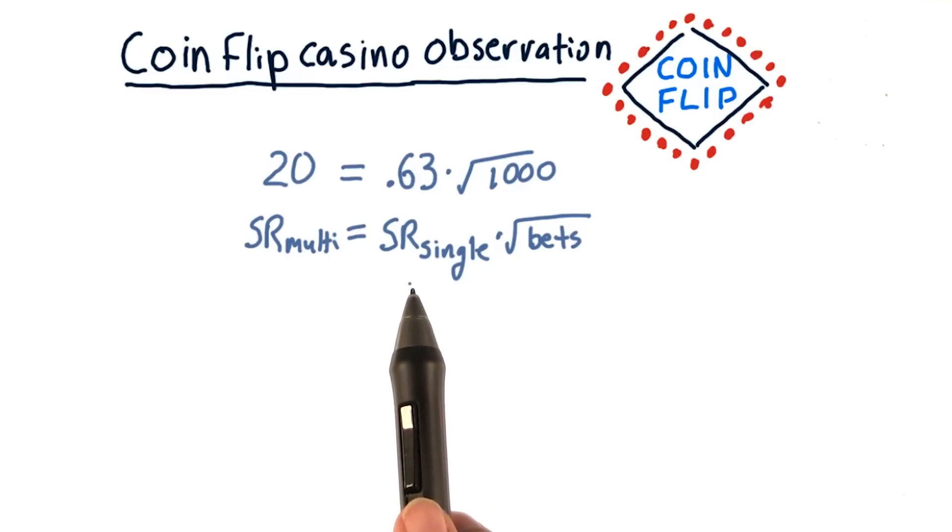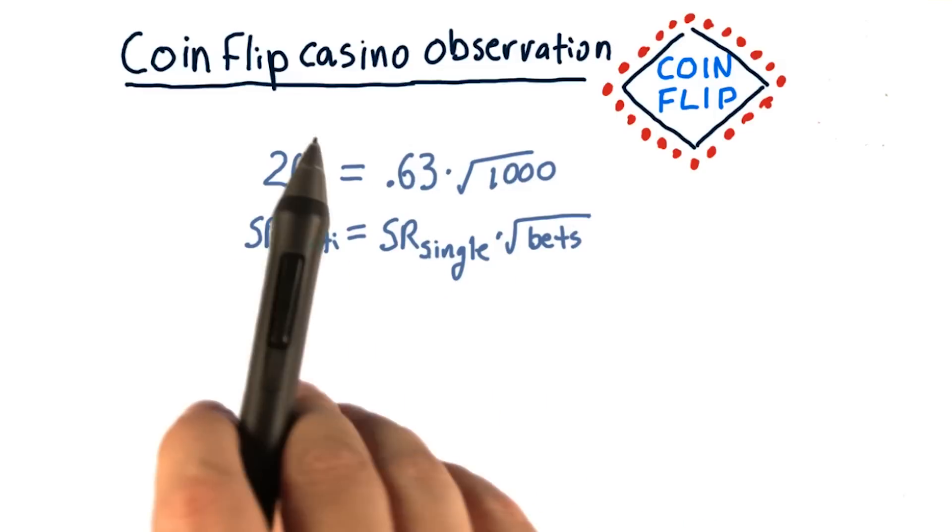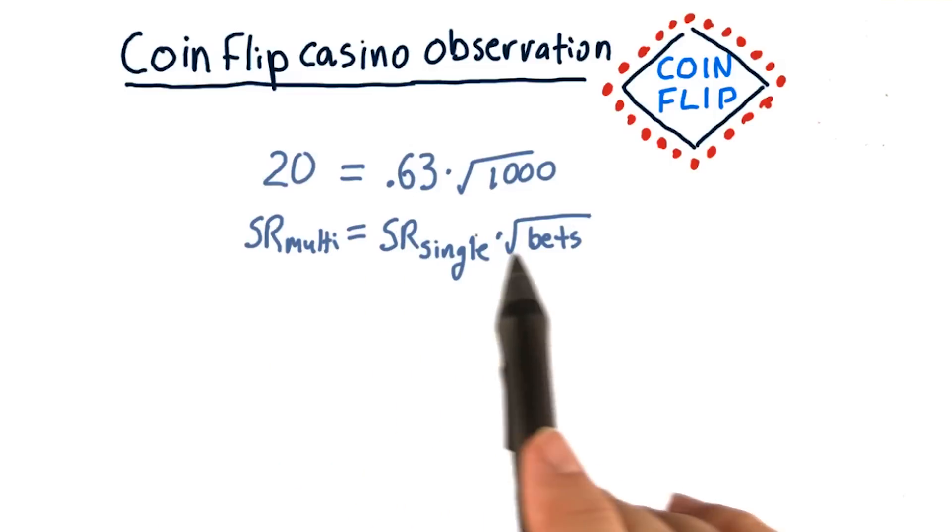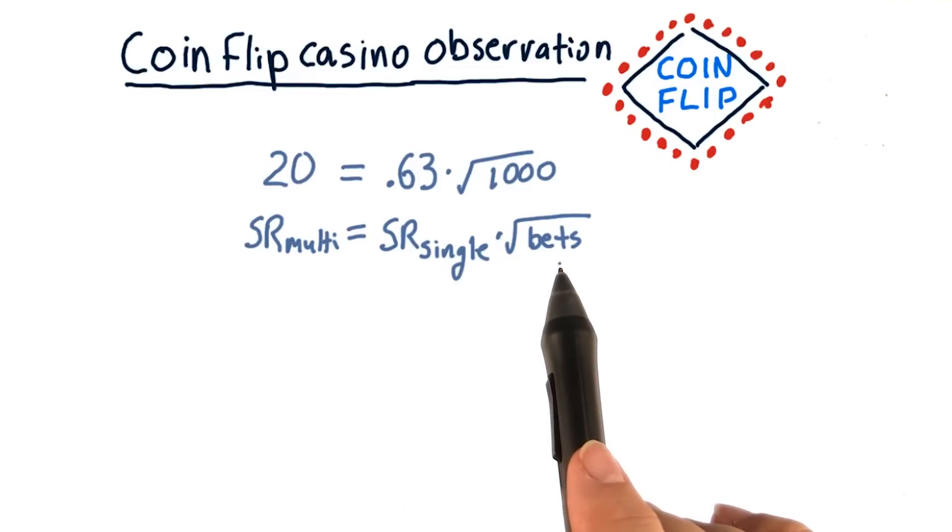In other words, the Sharpe ratio for the single bet, 1,000 chips on one table, is sort of our base case. And as we spread it out over more and more tables, the Sharpe ratio improves by the square root of that number of bets.